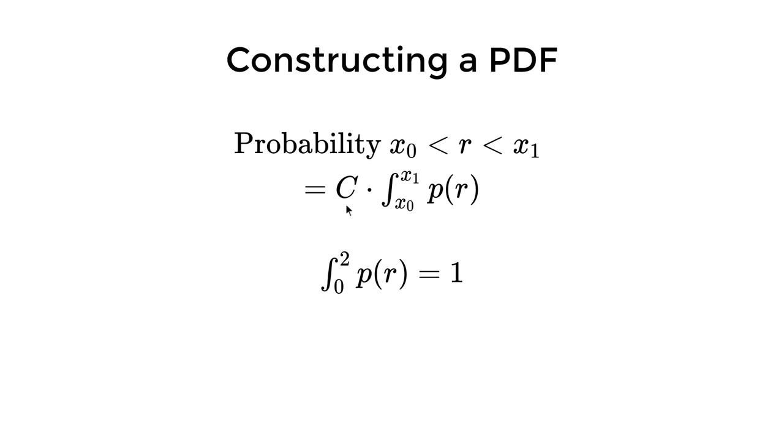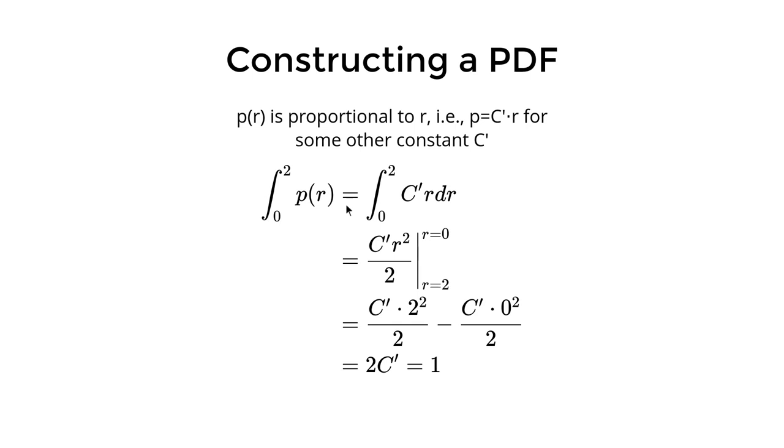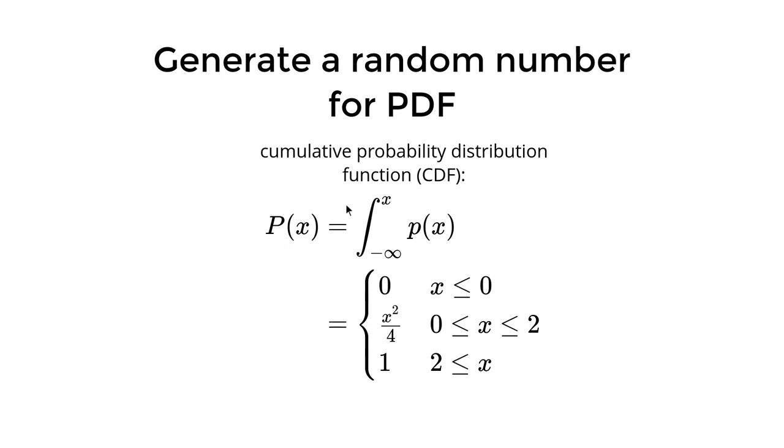Since this scaling factor is arbitrary, we can just pick 1. In this particular case, we can use some algebra to say our probability is the scaling factor times x. Then we do the integral and we get the result 2c prime is equal to 1, and we already know the original integral is 1. So we get the constant c prime is 0.5.